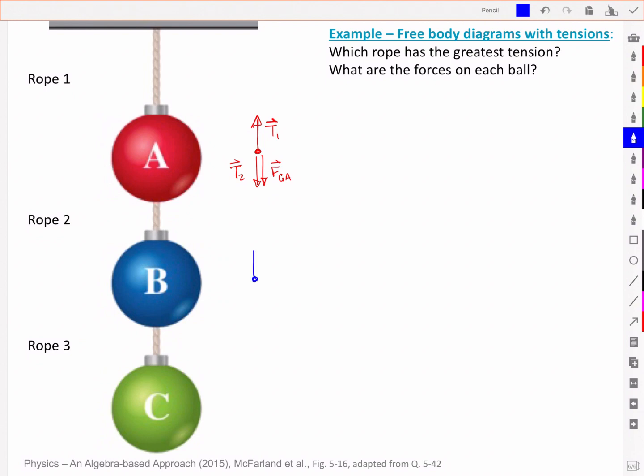For B, similar—I've got an upward tension T2, a downward tension T3, and again the force of gravity acting on that bauble.